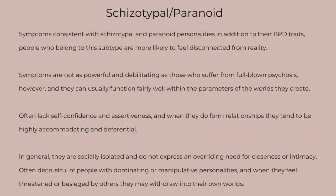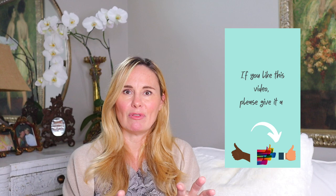Lastly, the schizotypal and paranoid group had symptoms consistent with schizotypal and paranoid personalities in addition to their BPD traits, and were more likely to feel disconnected from reality. The symptoms were not as powerful or debilitating as full-blown psychosis, but there was some of that psychosis-adjacent quality we can see in borderline. They tended to function better overall, and episodes were not as intense or long-lasting. They often lacked self-confidence and assertiveness, and when they did form relationships, they tended to be highly accommodating and deferential — not bringing their true self in an effort to please. In general, they were more socially isolated, coping by turning inward and being alone to deal with overwhelming thoughts or feelings.